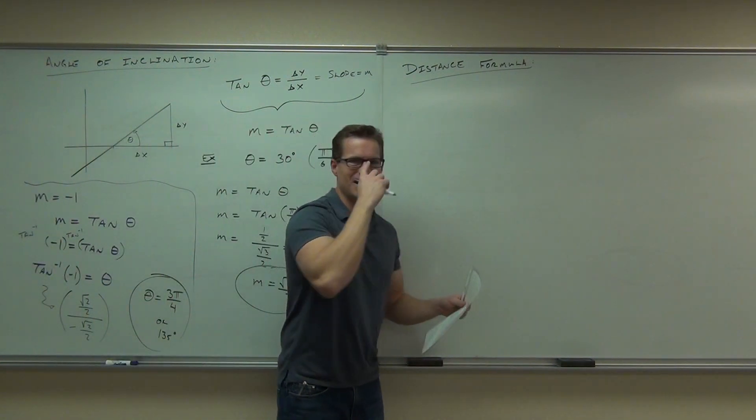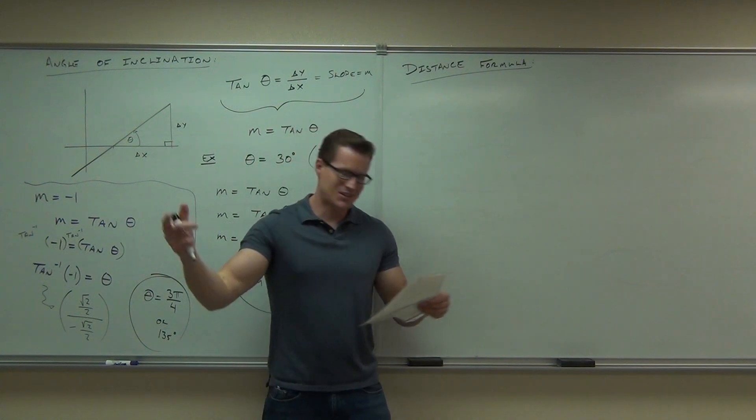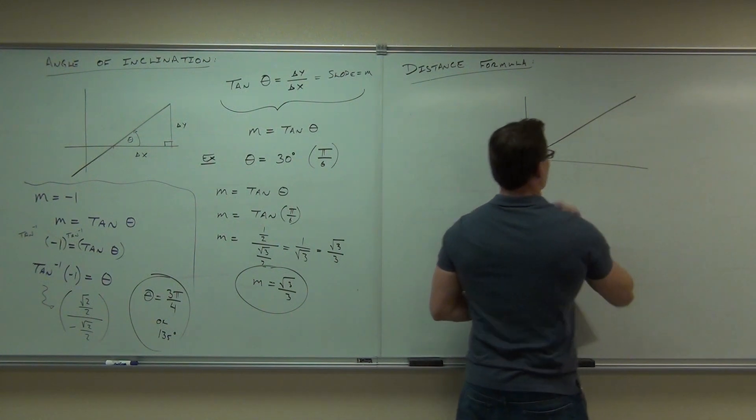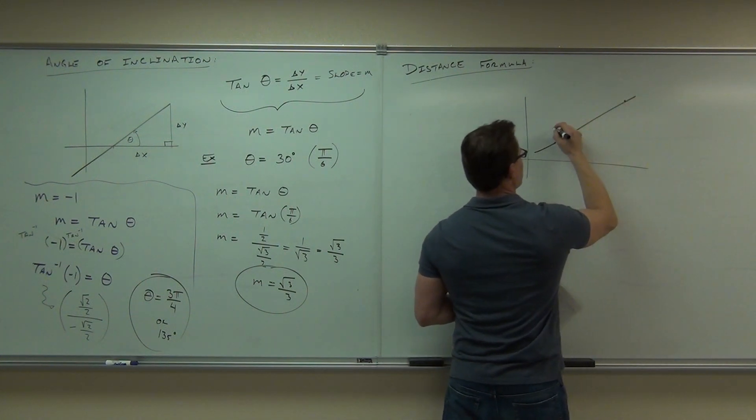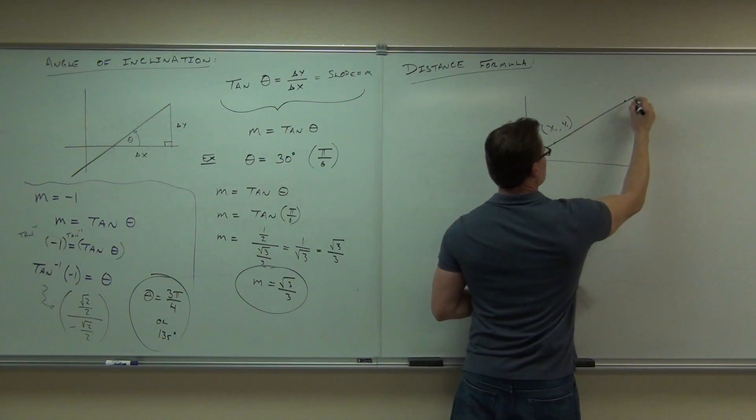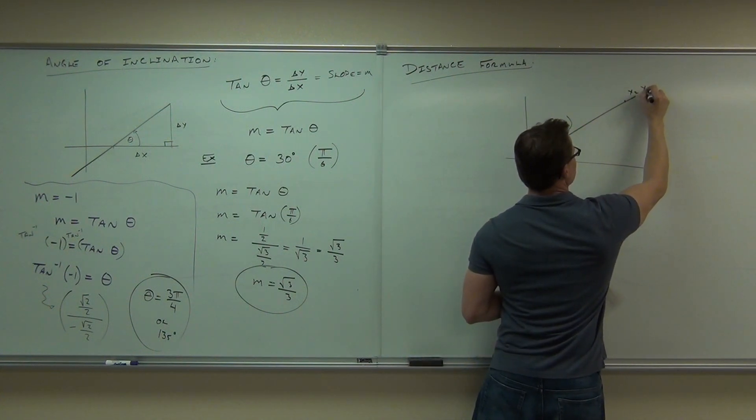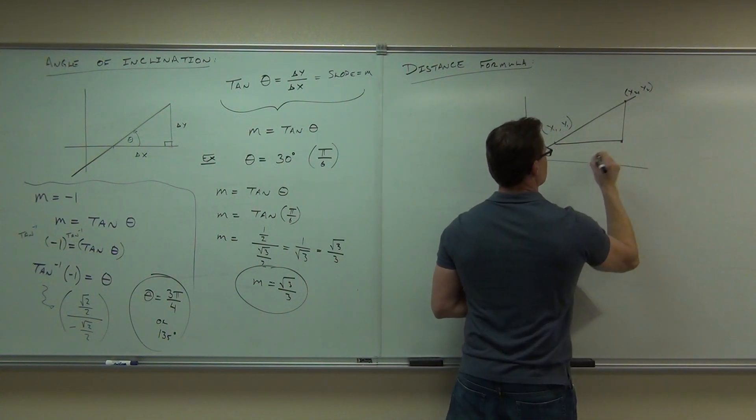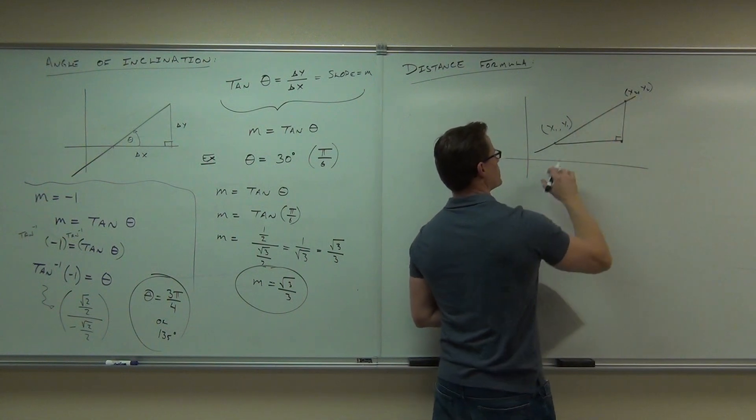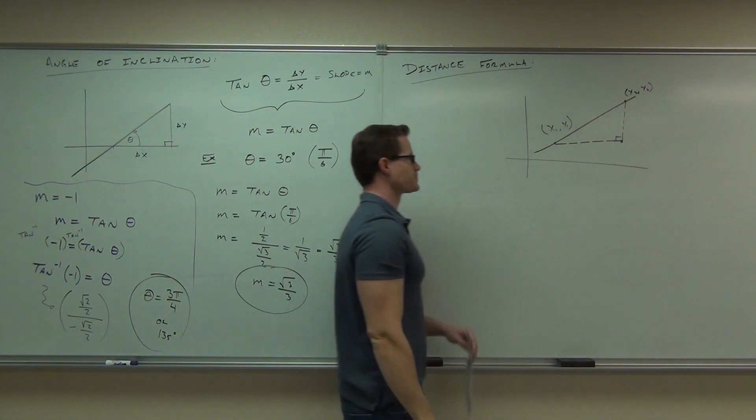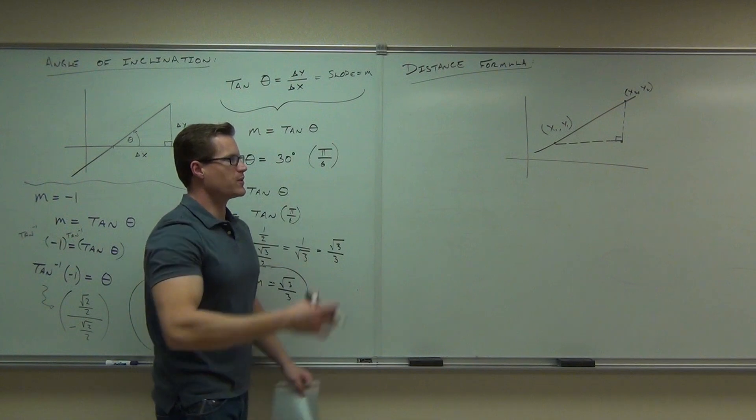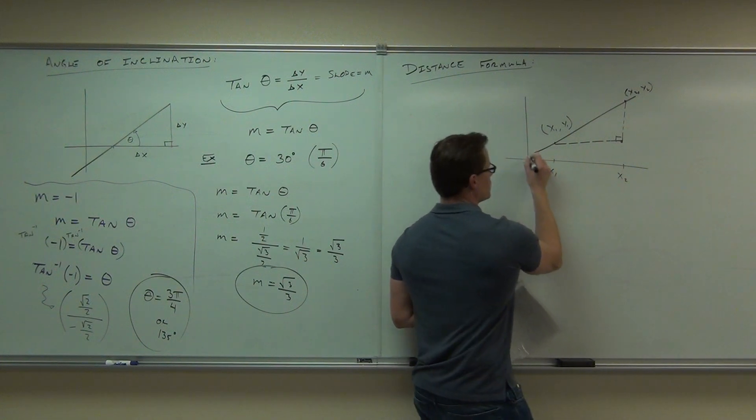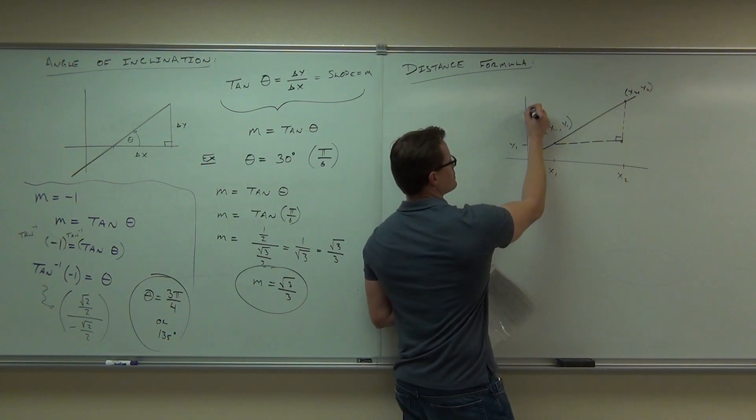Okay, shall we? Distance formula in about a minute and a half, and we'll call it a day. Let's do distance formula. We're going to do it the same way that we did our slope formula, which is we're going to pick two random points, x1, y1, and x2, y2. Only this time, we're going to find the distance between them. If we have the x1, y1, and x2, y2, well, we for sure know that's x1, and that's x2, and this is y1, and that's, well, that's y2.